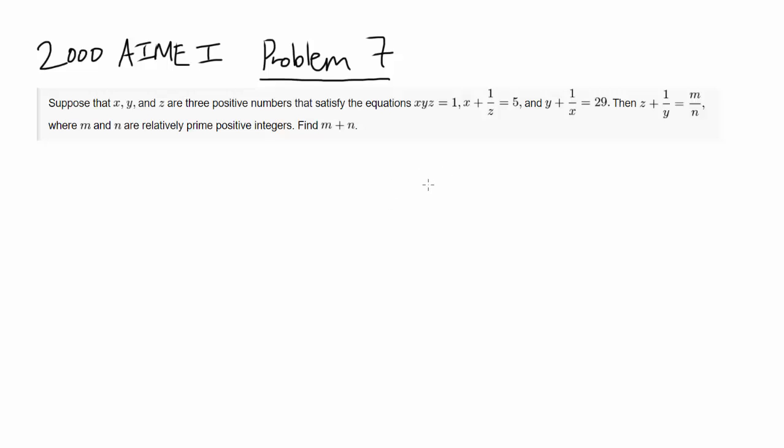This is problem number 7 from 2000 AIME I. We have x, y, z being 3 positive numbers that satisfy the equations: xyz equals 1, x plus 1 over z equals 5, y plus 1 over x equals 29, and z plus 1 over y equals m over n, where m and n are relatively prime positive integers, and they want us to find m plus n.